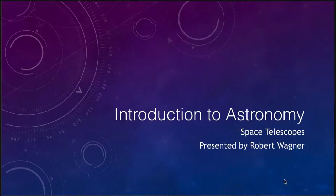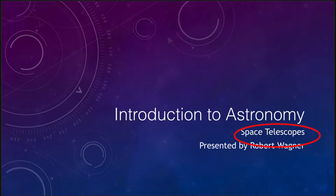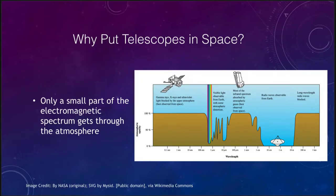Greetings and welcome to the introduction to astronomy. In this lecture we are going to talk about space telescopes — telescopes that are put out in space — and astronomers do this for good reason. Some things simply cannot be seen from the surface of the earth. Visible light makes it down to the surface of the earth, as do radio waves, but when we look at other types of electromagnetic radiation, only a very small portion of the electromagnetic spectrum is able to get through the atmosphere.